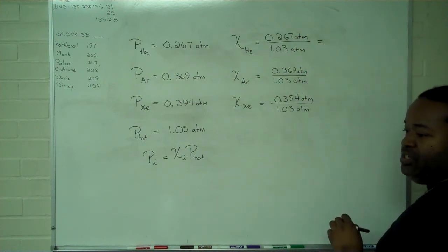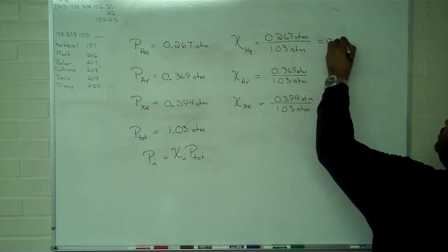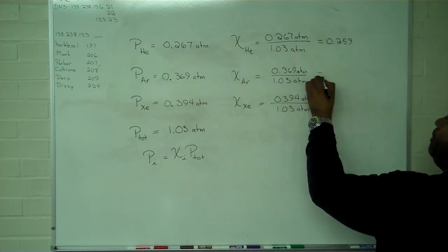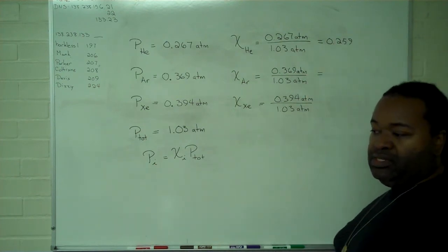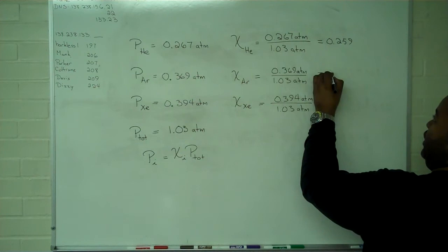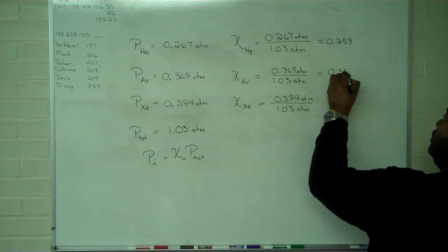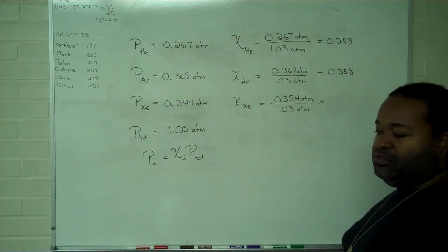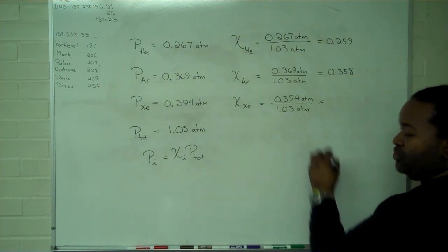The mole fraction of helium is 0.259. The mole fraction of argon is 0.358. The mole fraction of xenon is 0.383.